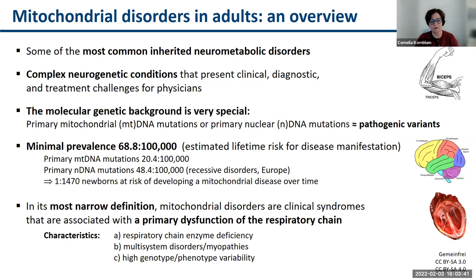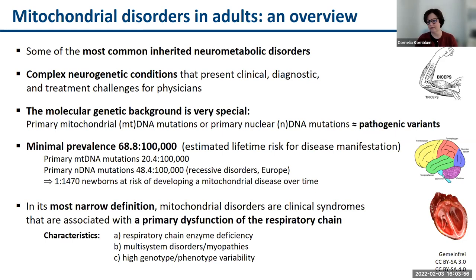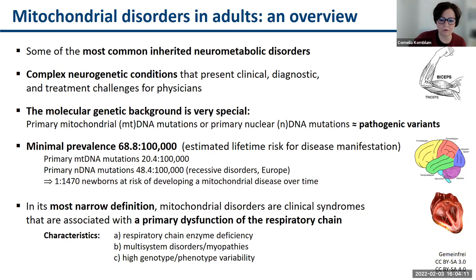In total, there are 1 in 1,470 newborns at risk of developing a mitochondrial disease over time. So mitochondrial disorders are rare disorders, but when you look at them in general, they are not rare at all because it's a very broad spectrum of diseases. In its most narrow definition, these disorders are clinical syndromes associated with a primary dysfunction of the respiratory chain, characterized by a respiratory chain enzyme deficiency. They are frequently multi-systemic, multi-organ disorders.